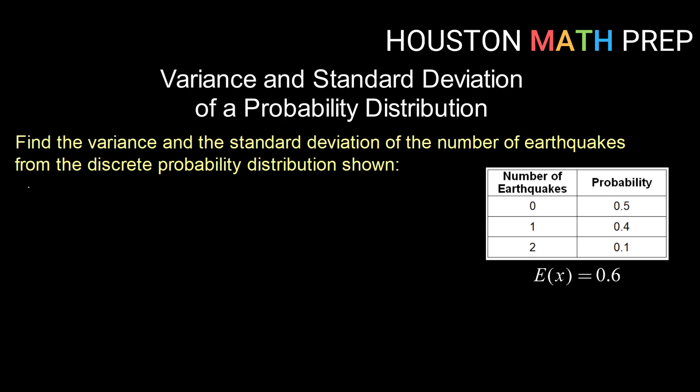So our variance, our sigma squared, will again be the sum of the squared difference between each random variable and the mean times the associated probability. So here that will be 0 minus 0.6 squared, so that would be the random variable 0 minus the mean 0.6 squared, times the probability that goes with 0 or 0.5.